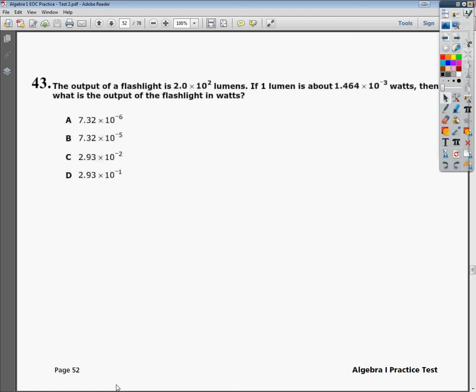Welcome. This is Tennessee Algebra 1 Practice Test 2, question number 43. The question says the output of a flashlight is 2.0 times 10 to the second lumens. So we're in scientific notation. If one lumen is about 1.464 times 10 to the negative 3 watts, what is the output of the flashlight in watts?